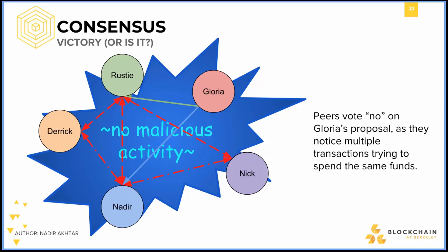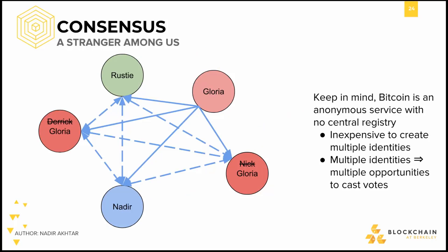It looks like we've solved all our problems. We have a voting system that ensures that no one can double-spend from the same funds, and each peer stores the whole history of transactions so that they can verify for themselves that the funds exist. However, we forgot one fatal truth about Bitcoin — the anonymity. Recall that Bitcoin is an accessible, anonymous network with no central registry. Banks keep track of everyone's identities and accounts, but no such infrastructure is available in Bitcoin to prevent anyone from producing multiple identities.